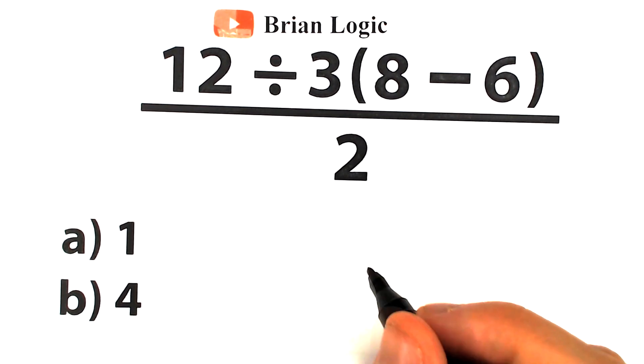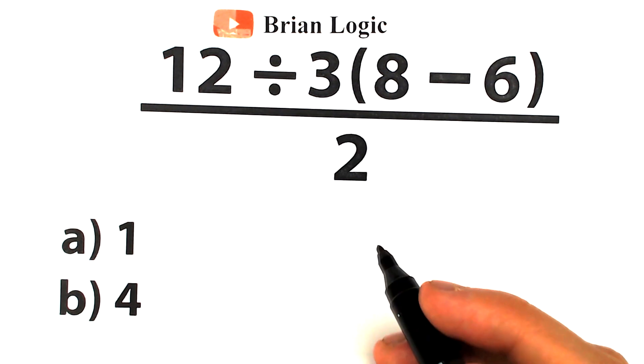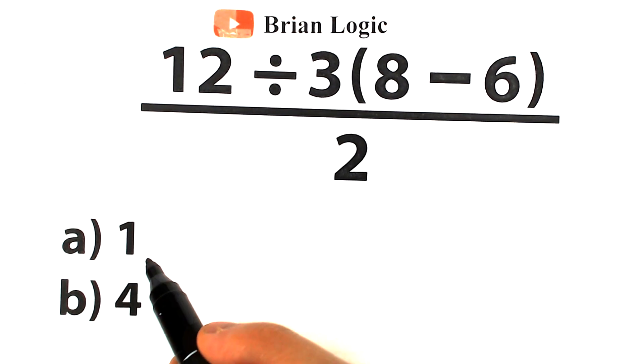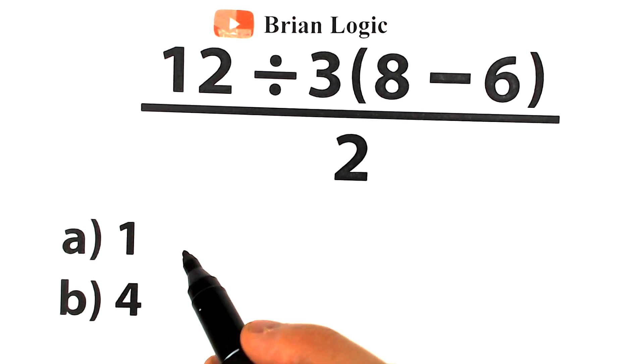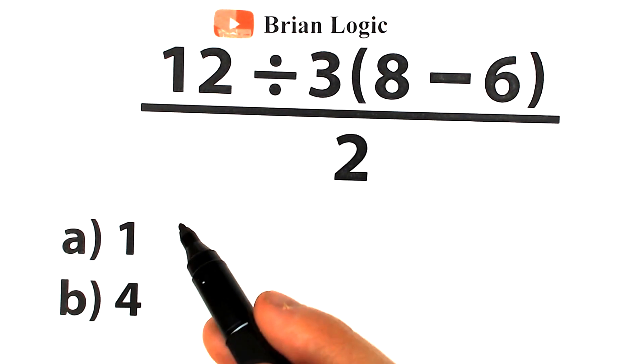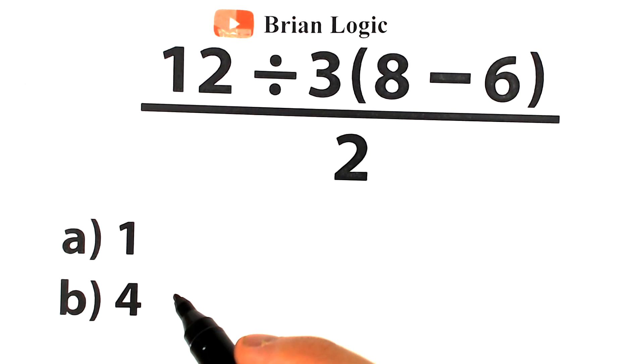People all over the world are arguing about the correct answer. One part of people say the correct answer is 1, another part of students say the correct answer is 4, so it has turned into a big argument.